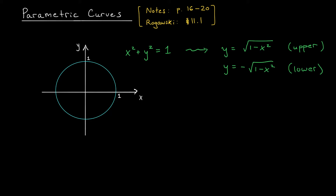We're going to begin our discussion with a classic example: the unit circle in R2. This is the curve we get from the equation x squared plus y squared equals one, and it's something of interest to us as mathematicians. Notice however that it is not the graph of a function y equals f of x because it fails the vertical line test. This is too bad because we like the unit circle but we also like working with things of the form y equals f of x.